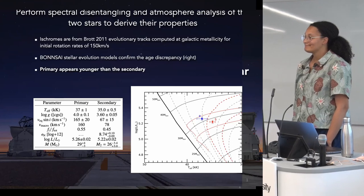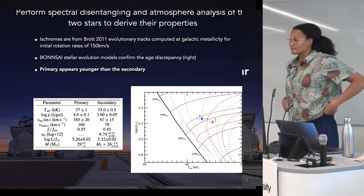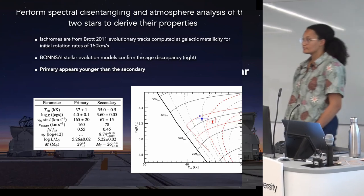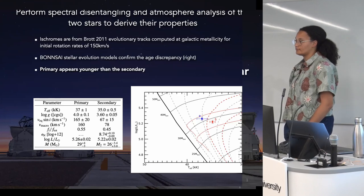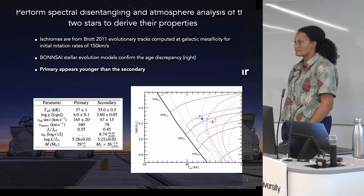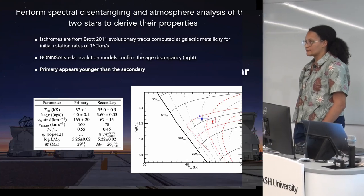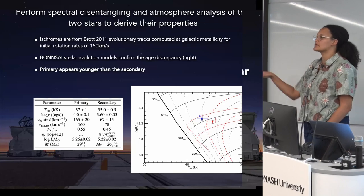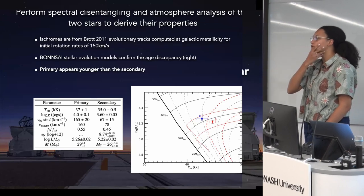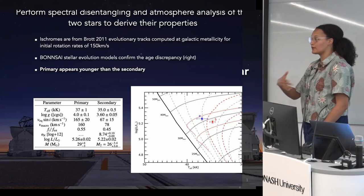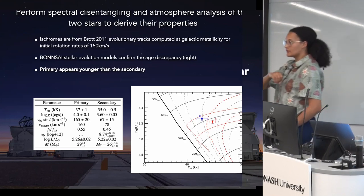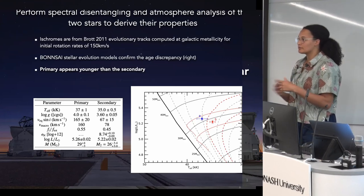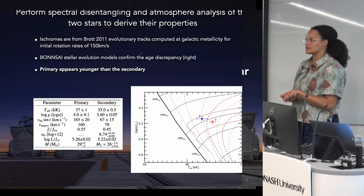Q: These massive stars are embedded in dusty clouds — how long do things remain highly obscured in these star-forming regions? A: Until the main sequence, because these massive stars form quicker than the dispersal time of the natal cloud. They will reach the main sequence, and only when they are producing significant feedback will they clear away the dust they formed out of. The dispersal time is too slow compared to the formation timescale of the stars themselves.